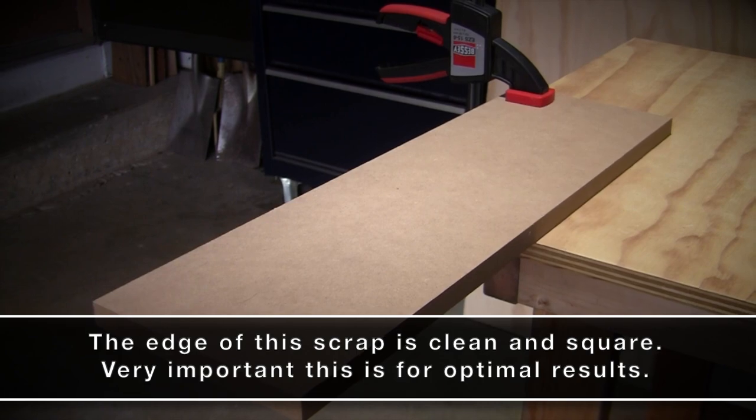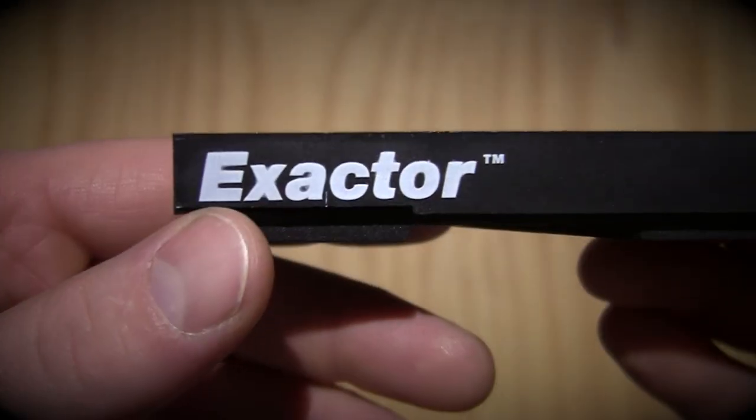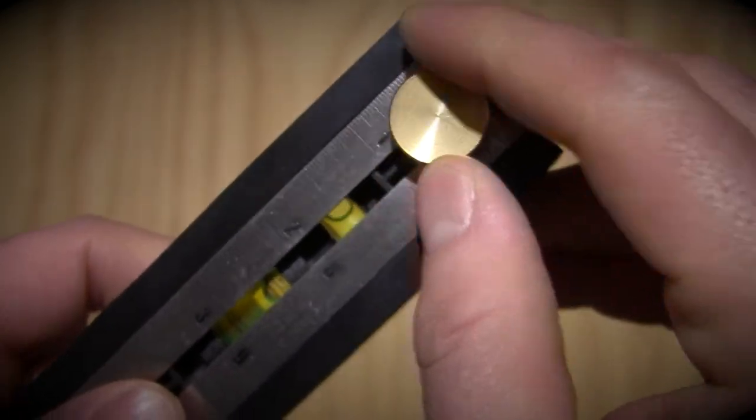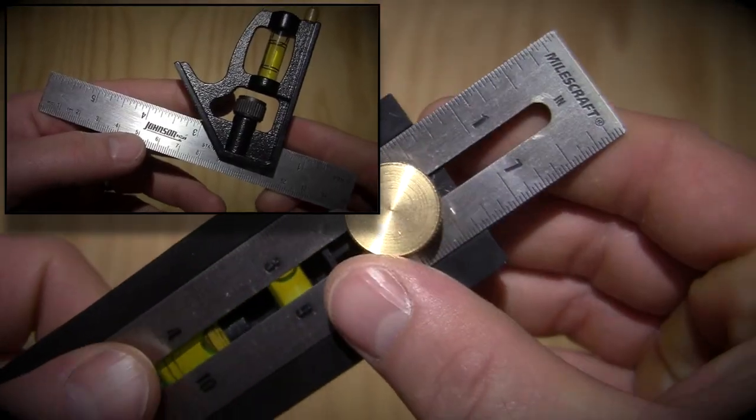I started off by clamping a scrap piece of MDF off the side of my smaller workbench. I then grabbed my exactor. Now if you don't own one of these, you can use a combination square for this part.